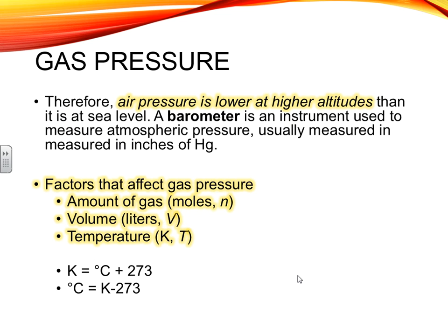Air pressure is lower at higher altitudes. For example, Denver is called the Mile High City because it is one mile above sea level. Players on opposing teams who play the Denver Broncos often have to sit on the sidelines with oxygen masks because they're not used to running with less oxygen. There is less oxygen at higher altitude because there is less gravity pulling the oxygen molecules down. Some things that affect gas pressure are the moles of a gas, the volume, and the temperature. For all problems in this unit, you have to convert your temperature to Kelvin by taking your Celsius temperature and adding 273.